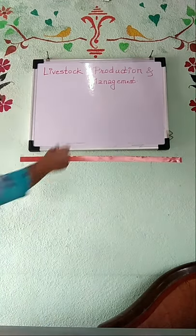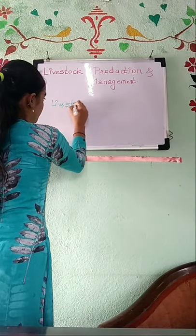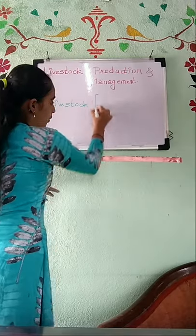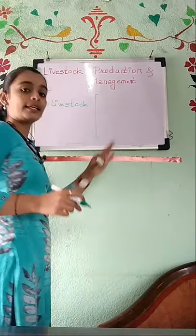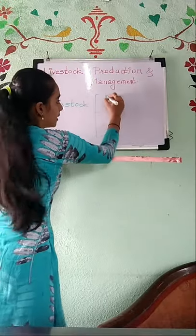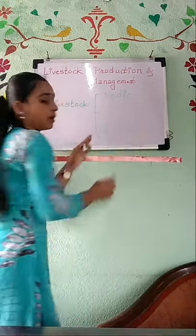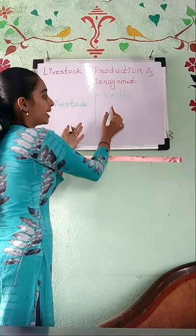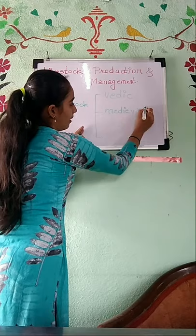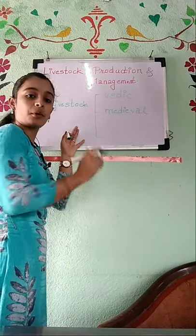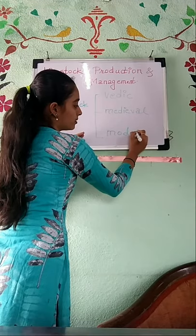In livestock, you will classify it into three areas: the Vedic period, the Medieval period, and the Modern period. The Vedic period refers to the ancient period — what was the importance of animals then — secondly the Medieval period, and thirdly the Modern era.